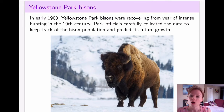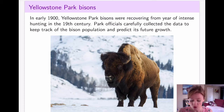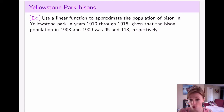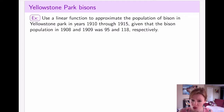Yellowstone Park is not only full of wolves and other animals, but they also have a fairly large population of bisons. Because the park has been pretty well surveyed over the years, we actually have very carefully collected data on the population of bisons dating back from the early 1900s. If you know the population in 1908 and 1909, can we use that information to predict population in further later years?